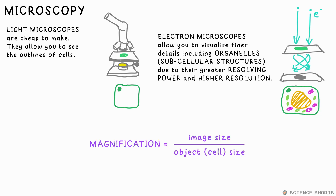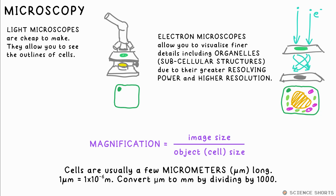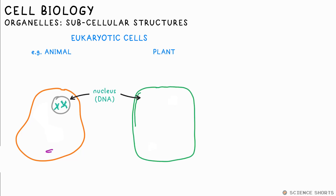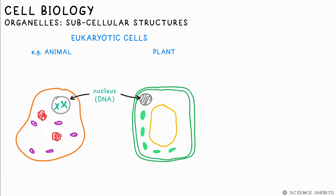We can calculate the actual size of a cell by knowing the magnification of the microscope. Magnification is equal to image size divided by object size. We put cells into two main groups. Eukaryotic cells have a nucleus in which their DNA is found — that's your plant and animal cells, for example.